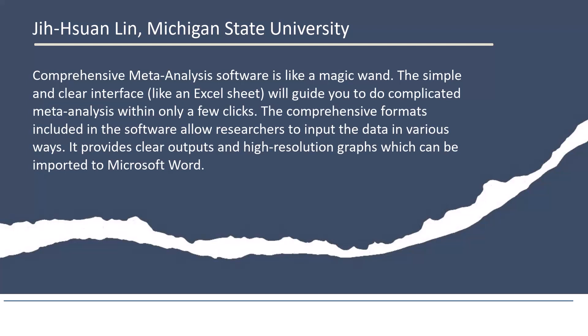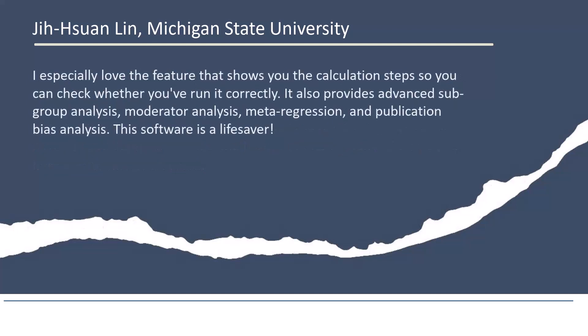Jaisuan Lin, Michigan State University: Comprehensive meta-analysis software is like a magic wand. The simple and clear interface, like an Excel sheet, will guide you to do complicated meta-analysis within only a few clicks. The comprehensive formats included in the software allow researchers to input the data in various ways. It provides clear outputs and high-resolution graphs which can be imported to Microsoft Word. I especially love the feature that shows you the calculation steps so you can check whether you've run it correctly. It also provides advanced subgroup analysis, moderator analysis, meta-regression, and publication bias analysis. This software is a lifesaver.